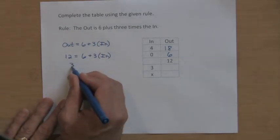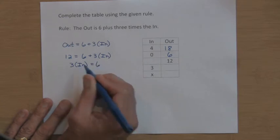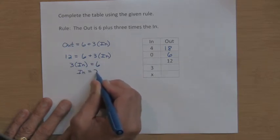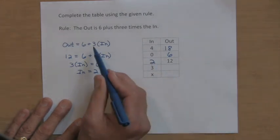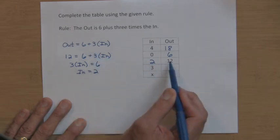So that means three times the in has to equal six. And if you triple something and it makes six, then that something has to be two. So the in is two. And if you check that with our rule, three times two is six, plus six more is 12. That works.